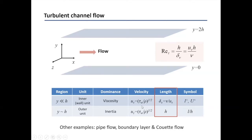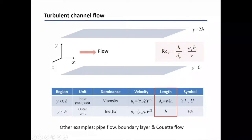In the near-wall region, viscosity is important, so I use the plus symbol when normalizing with the viscous length scale. Otherwise, I use h, the half-height of the channel, as the length scale. All fundamental flow configurations — pipe flow, boundary layer, Couette flow — follow similar frameworks.